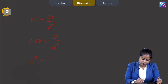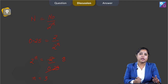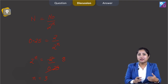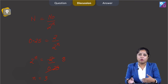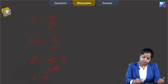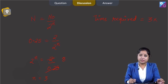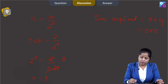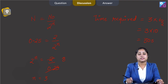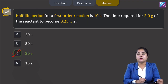2 raised to the power N equals 2 divided by 0.25, which equals 8, so N equals 3. That means 3 half-lives are required to reduce 2 grams to 0.25 grams. Time required equals 3 multiplied by the half-life period of 10 seconds, which equals 30 seconds. The correct answer is option C.